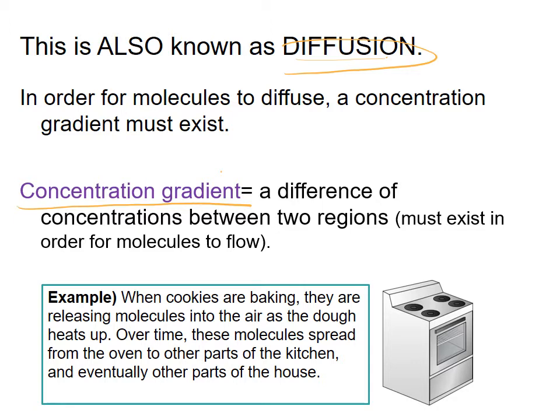For example, when cookies are baking, they are releasing molecules into the air as the dough heats up. Over time, these molecules spread from the oven to other parts of the kitchen and eventually other parts of the house. You know that you can smell the cookies as they bake, and that's because the scent has diffused throughout the house.